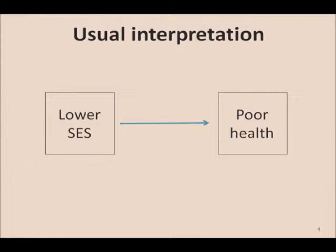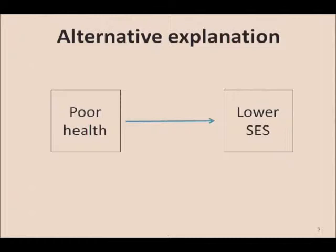But of course there is also the possibility of the other direction, which is that poorer health may contribute to lower SES. This is most likely for income, and economists are usually the ones who have focused on this particular causal direction. Some of the most convincing data comes from older populations from the Health and Retirement Survey, showing that when people become ill, they're more likely to retire early, and therefore their income drops.